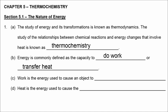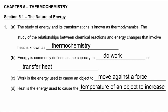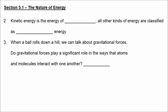Work is the energy used to cause an object to move against a force, and heat is the energy used to cause the temperature of an object to increase. Kinetic energy is the energy of motion. All other kinds of energy are classified as potential energy.